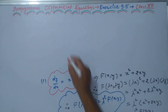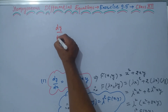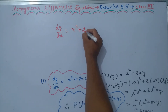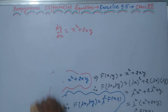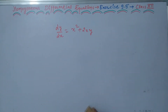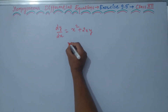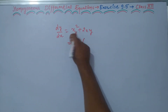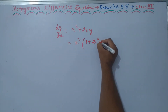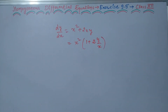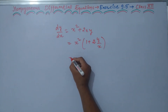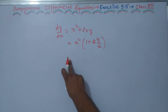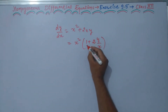Another method: suppose we have dy/dx equal to x squared plus 2xy. We take x squared common, and we are left with 1 plus 2 times y upon x. This means the equation can be expressed in terms of y/x, and this is also a way to show that the given differential equation is a homogeneous differential equation.